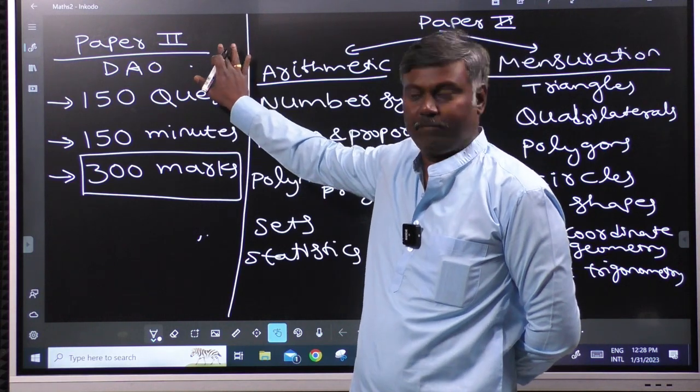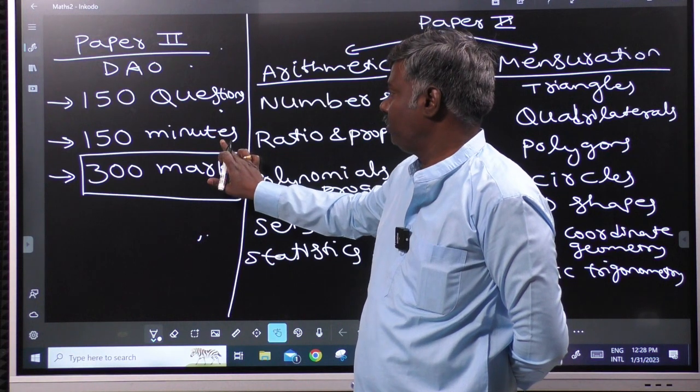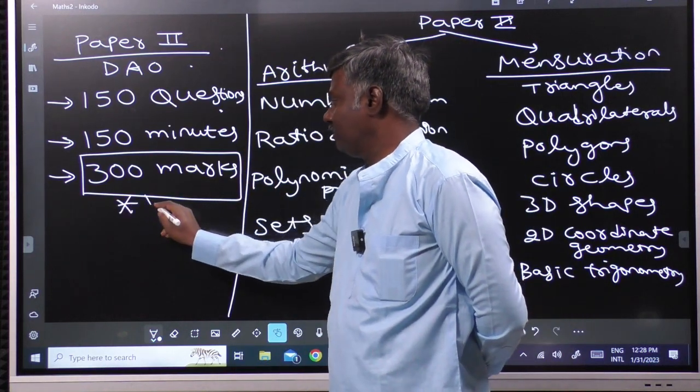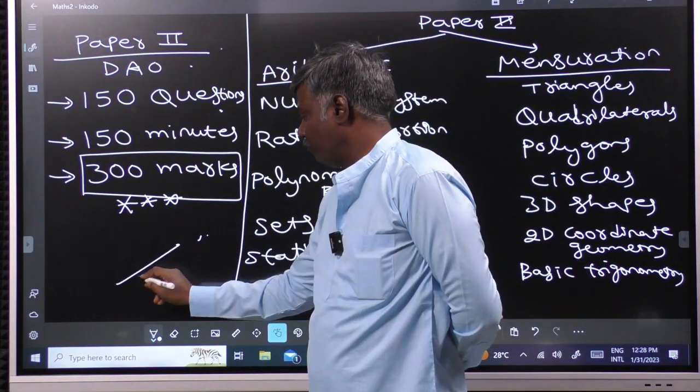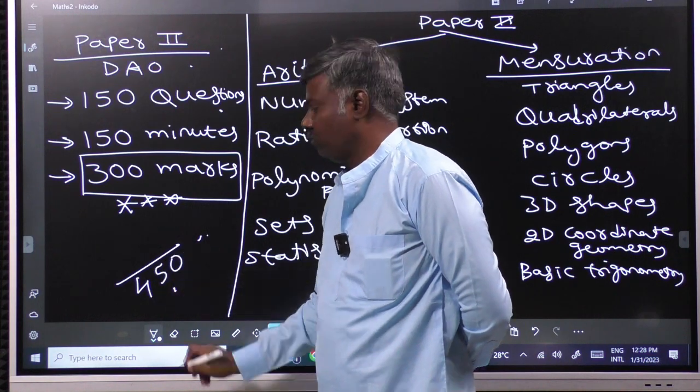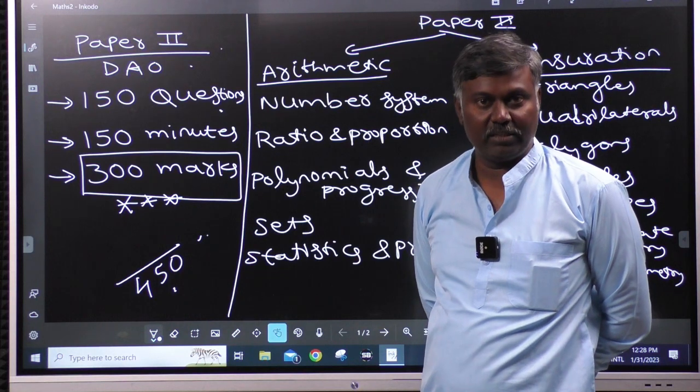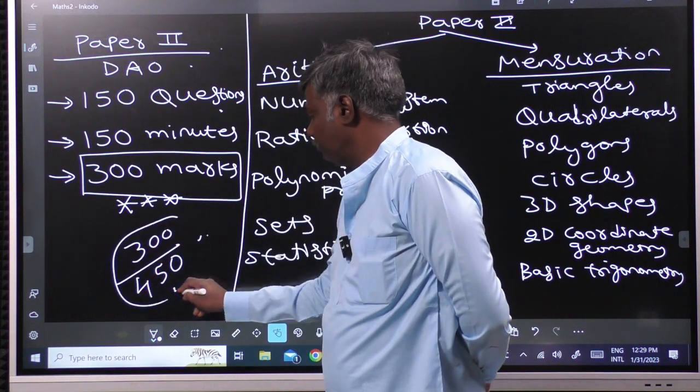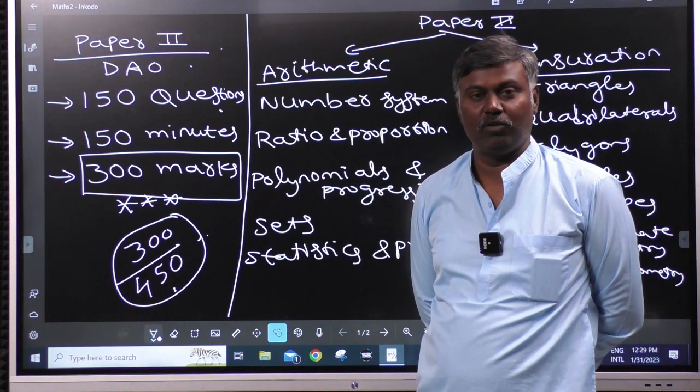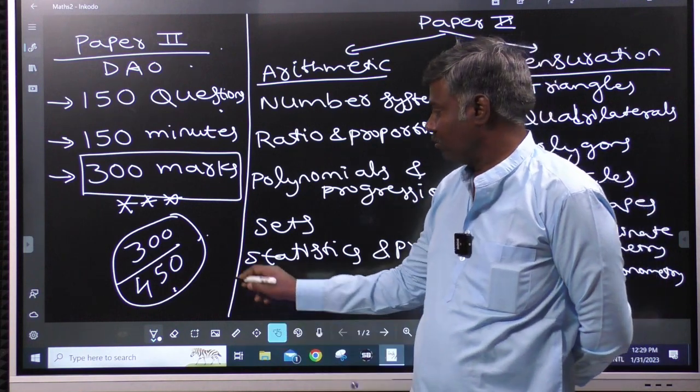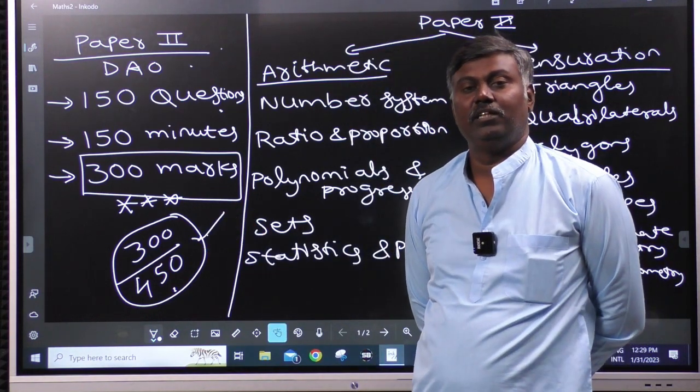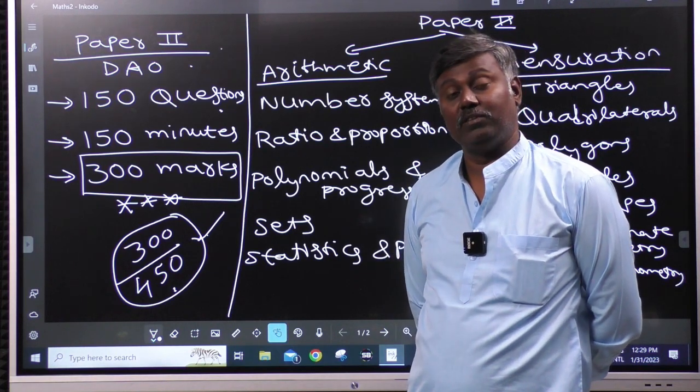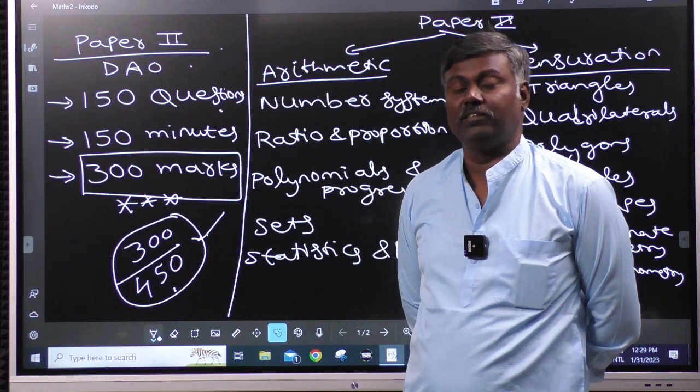Paper 2 will be 150 questions and weightage, this is very important. Total is 450, Paper 1 is 150 marks, Paper 2 is 300. So weightage is very important. I have a lot of scores but a lot of scores have been lost, so weightage for the exam for particular professional officer is important, so make sure that you practice and prepare.